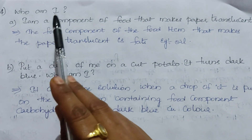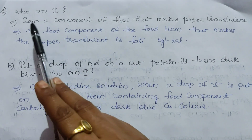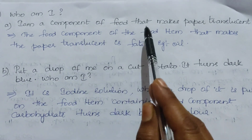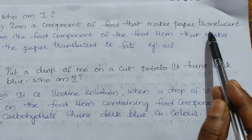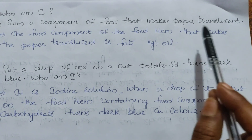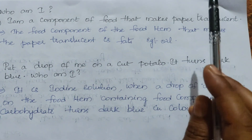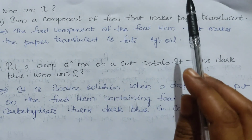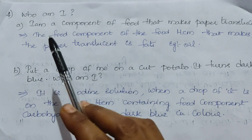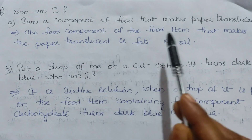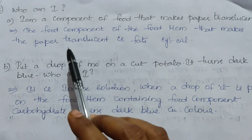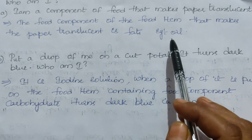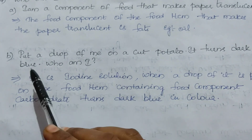The fourth question is an activity: 'Who am I?' The first clue is: I am a component of food that makes paper translucent — meaning the paper becomes blurry when this food component is present on it. The food component that makes paper translucent is fats, for example oil.